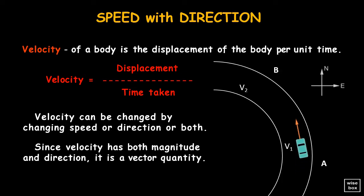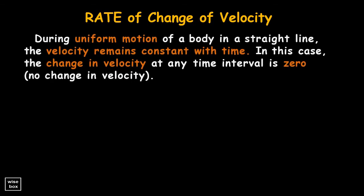Velocity can be changed by changing speed or direction or both. When a car turns around a curve, it is changing both in its speed — in this case it is slowing down — and in direction, in this case from going north to going west. During uniform motion of a body in a straight line, the velocity remains constant with time. The change in velocity at any time interval is zero, meaning there is no change in velocity.